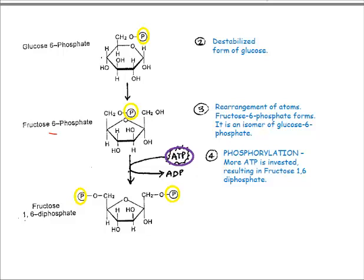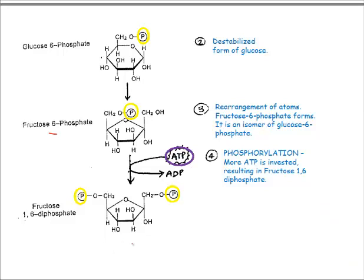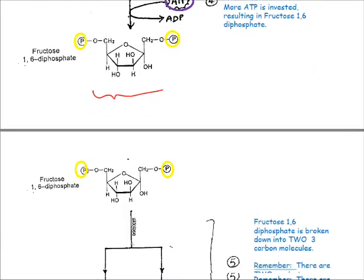Fructose 6-phosphate needs another hit of energy for anything to happen, and that's exactly what occurs. Another ATP molecule comes along and donates another high-energy phosphate to the fructose, creating fructose 1,6-diphosphate. It's called 1,6-diphosphate because it has two phosphates attached to its first and sixth carbons. Now there's enough energy held in the bonds of this sugar that bonds are going to start to break.